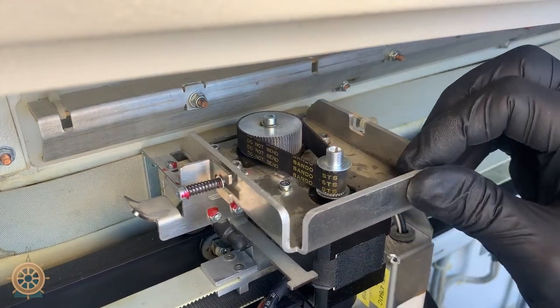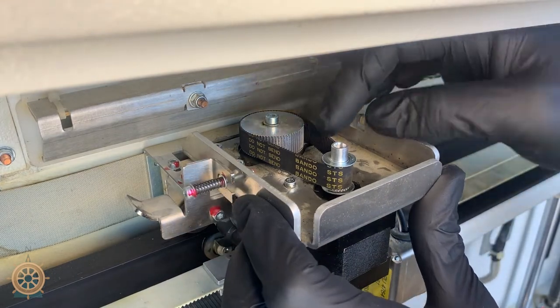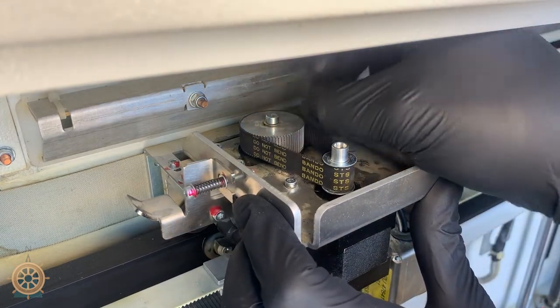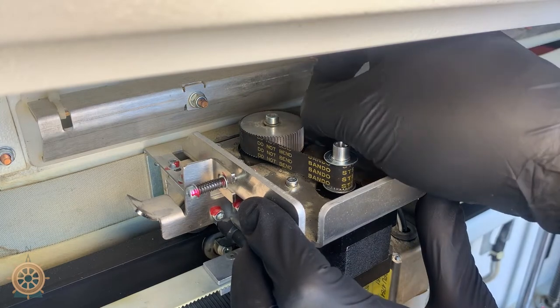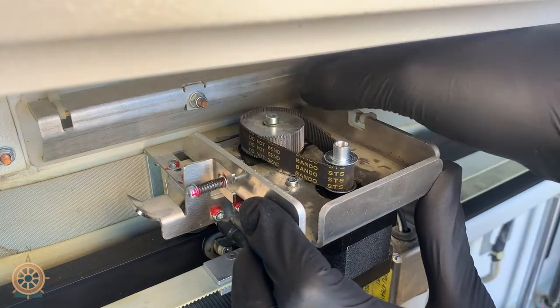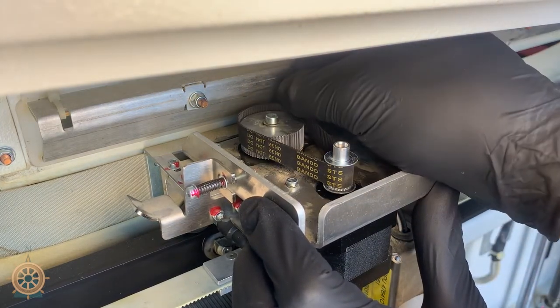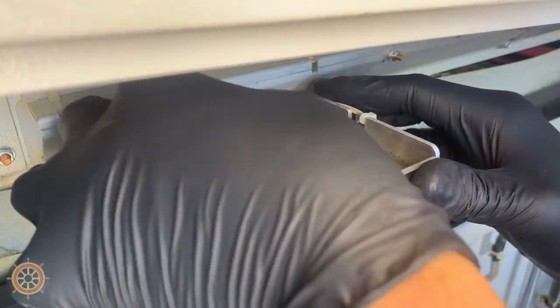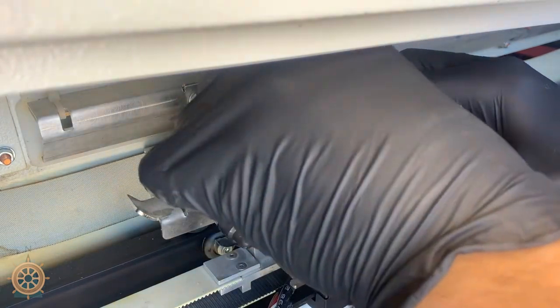And then all you need to do is pull it over and you'll lift the belt up from the back. Sometimes it can be a little stuck on there, and then it pops right off.